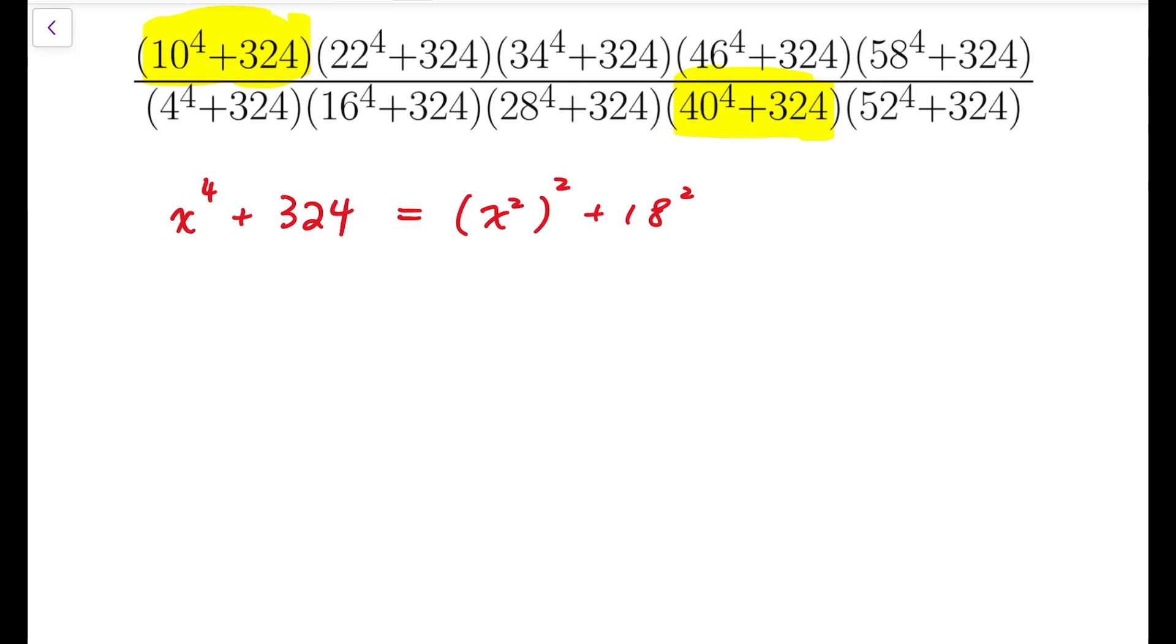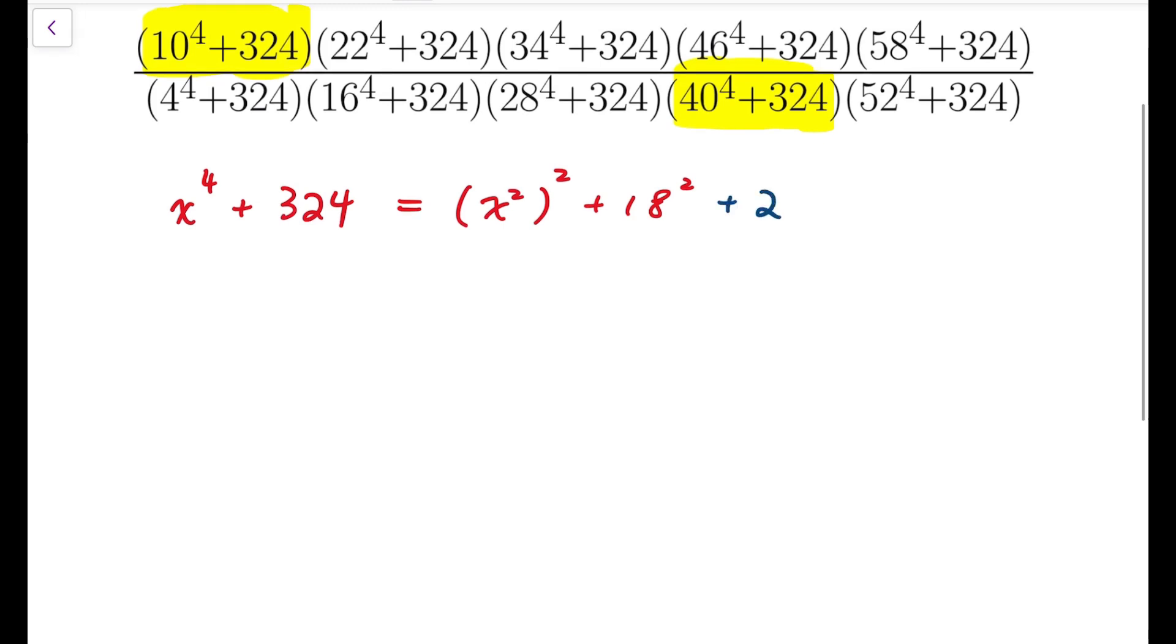I'm going to add some extra term, so that together with x to the 4 and 324, we'll get a perfect square, and that will be 2 times x squared times 18, whole squared. So that all together, we'll have x squared plus 18 whole squared.